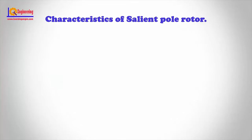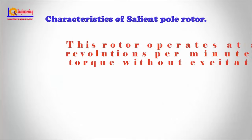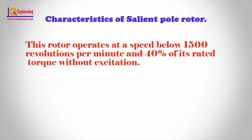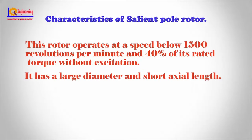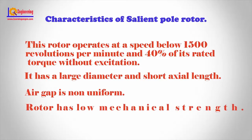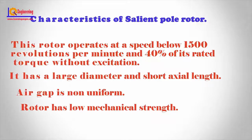Characteristics of salient pole rotor: This rotor operates at a speed below 1500 revolutions per minute and provides 40 percent of its rated torque without excitation. It has a large diameter and short axial length. The air gap is non-uniform, and the rotor has low mechanical strength.